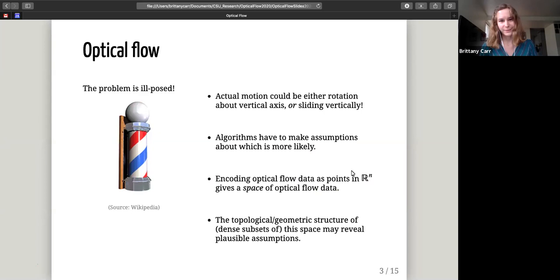But we have some issues that arise with trying to recapture this problem. So the first thing is that this problem is ill-posed. If you look at the example of the barbershop pole on the left, if any of you who have experienced a barber pole, you know that all it's doing is turning around and those stripes that appear to be moving are just a result of this cylinder rotating. But if you just look at a single pixel, the actual motion that it could be capturing is just that that pixel is sliding up vertically. So if you're going to have an algorithm that estimates your optical flow, it's going to have to make an assumption about which is going to be more likely. So we want to determine a way to test which is going to be more likely, and the way we're going to do that is by encoding optical flow data as a point in R^n, which is going to give us a space of optical flow data. So since we are topologists and data scientists, the topological slash geometric structure of dense subsets of this space might reveal some plausible assumptions. So if we can gain an idea of the underlying structure of the data, we can say something about which assumption we want to make.